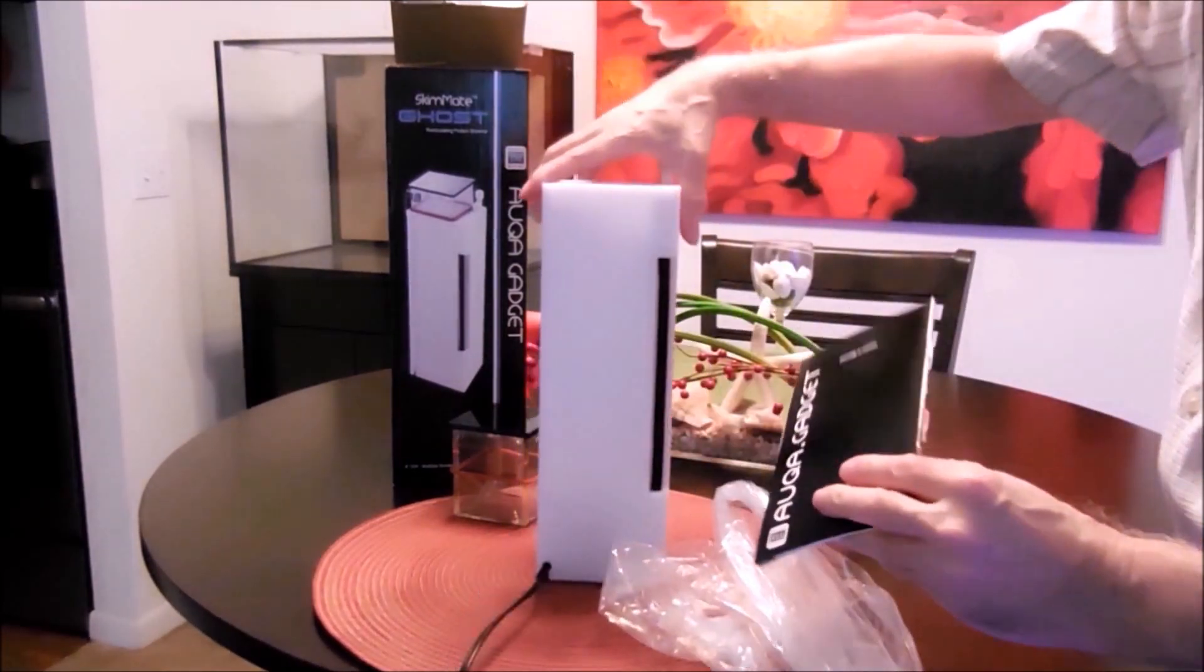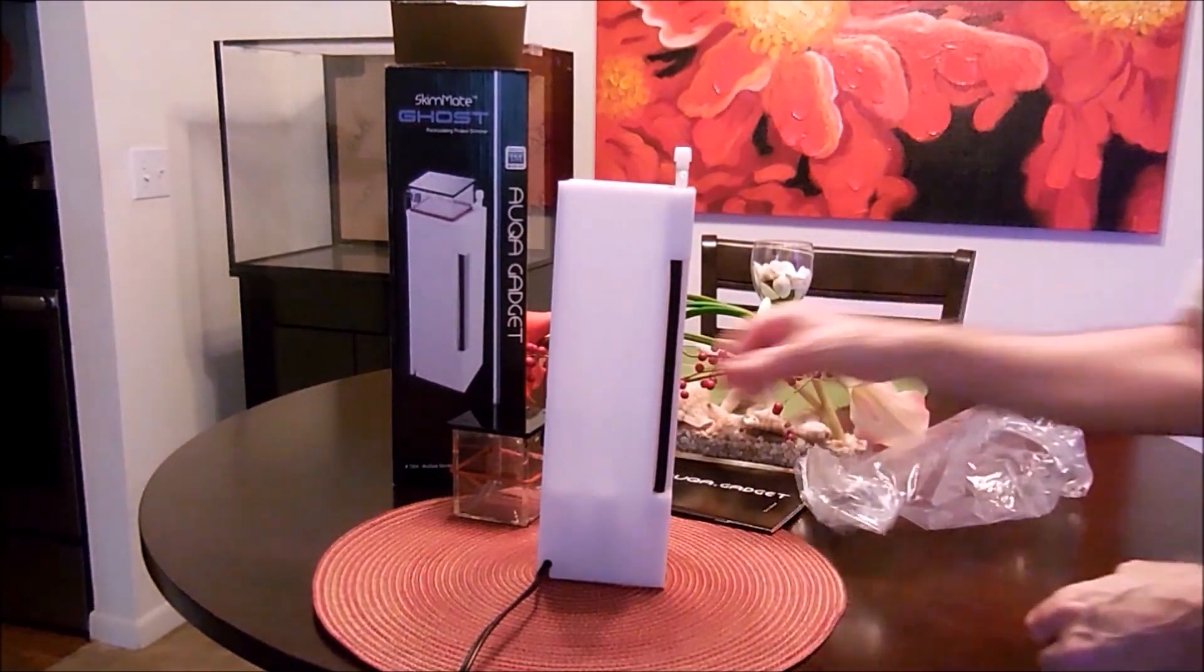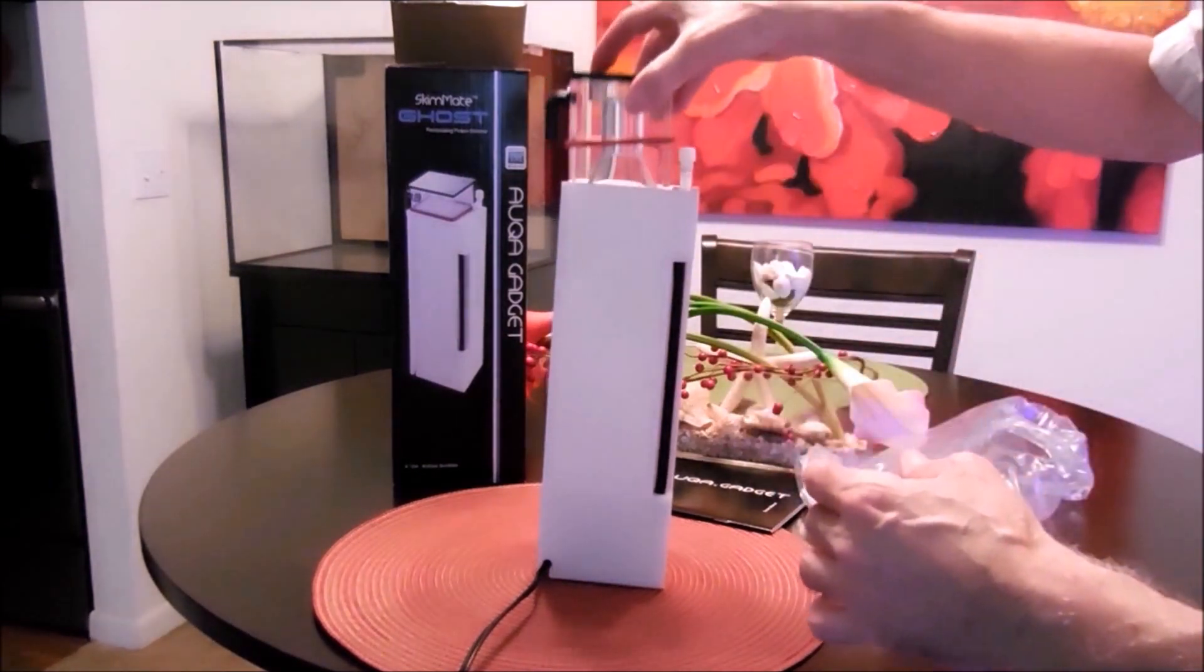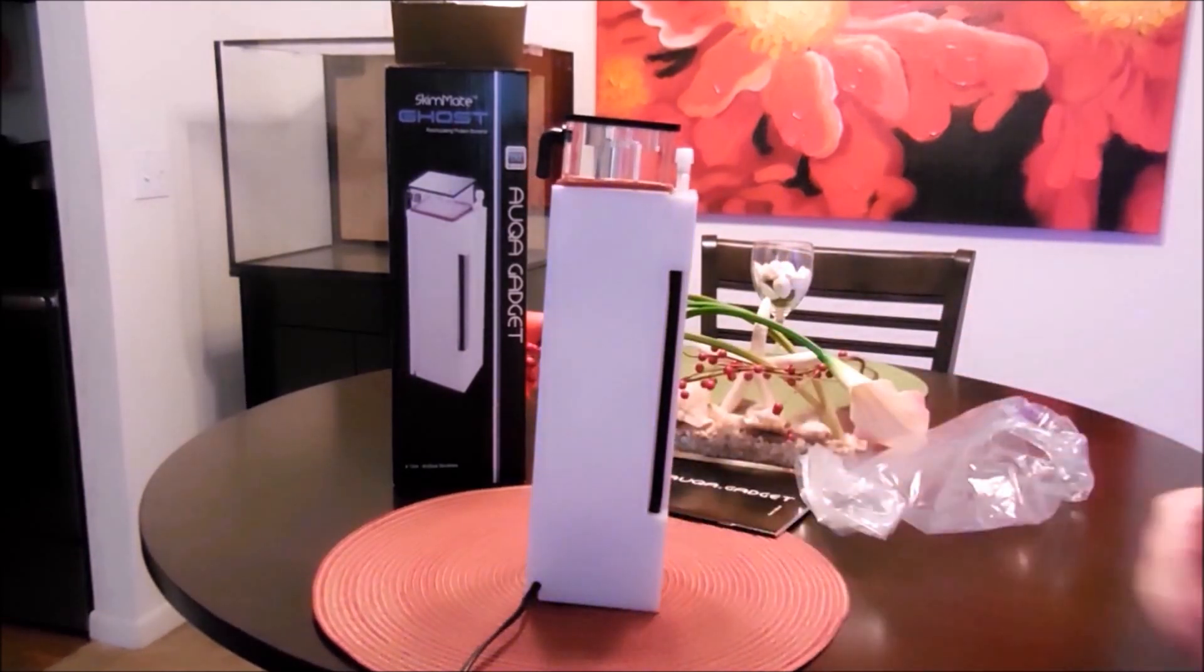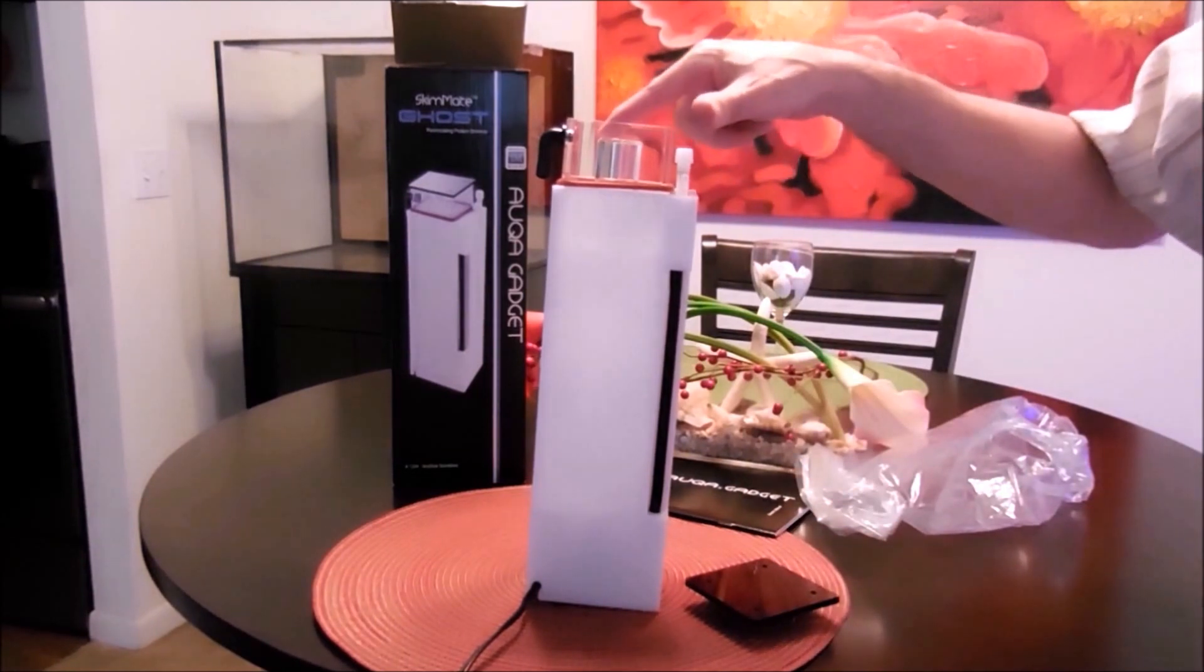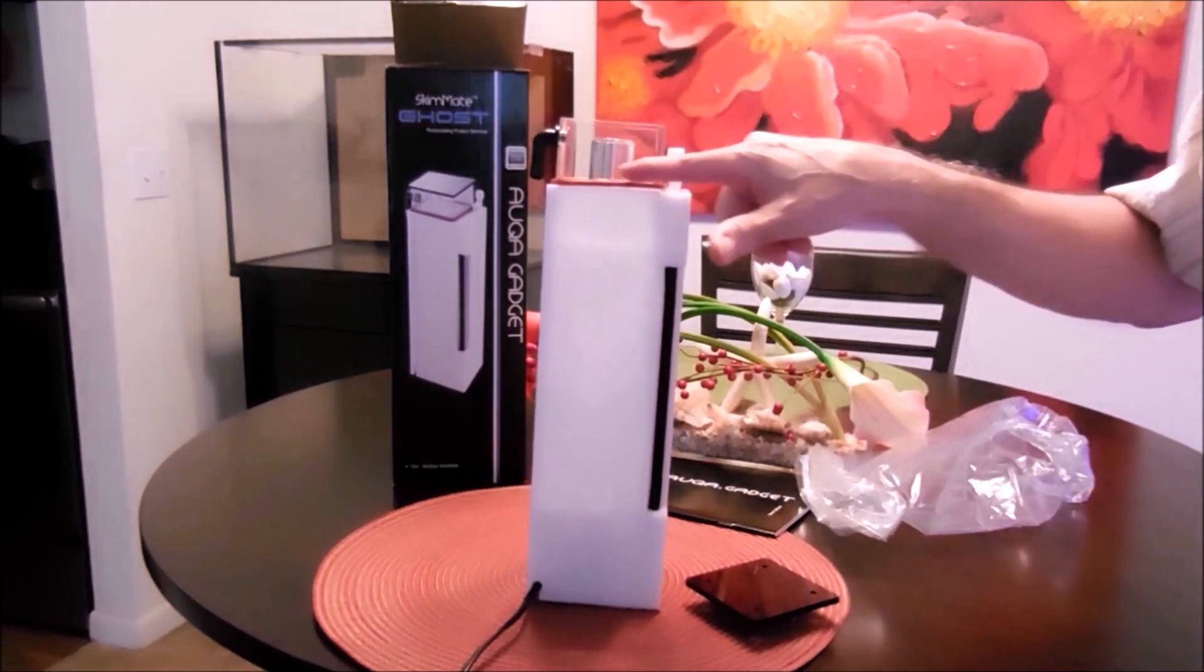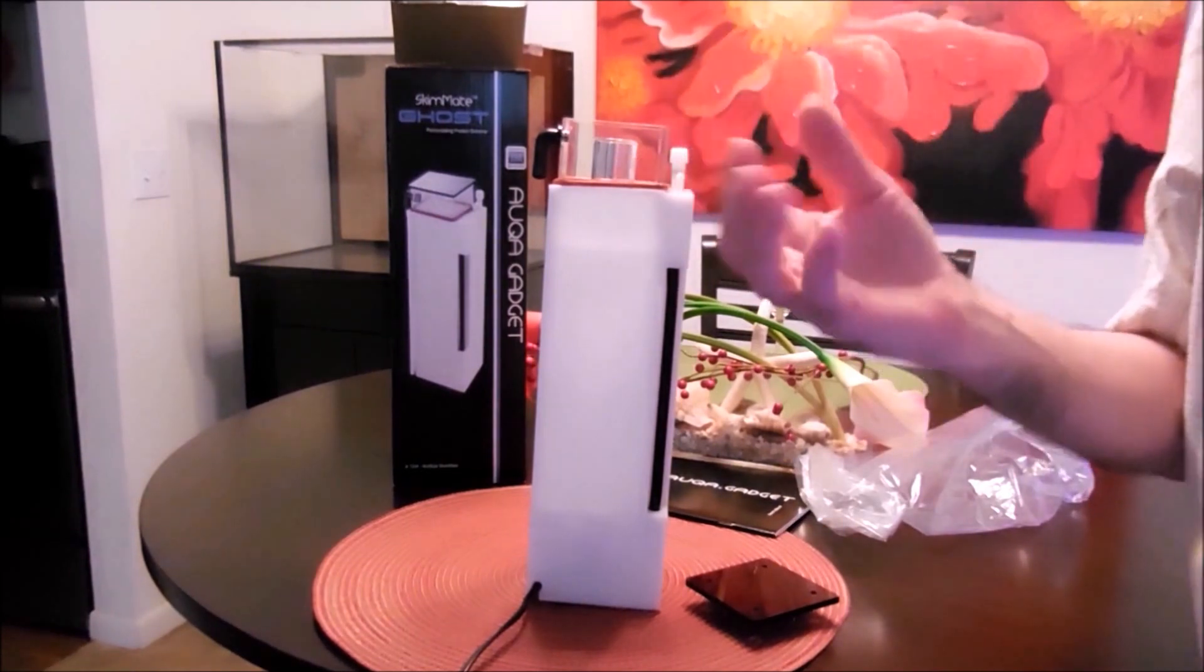Of course, we have the instructions. Let's put them back here. And then let's put back the collection cup. This is basically how it looks. There are different ways of adjusting the height of the water when it goes into the inner tube. The bubbles will stay there, will cascade to the cup, having that coffee-colored skim material, the protein that's coming out of the tank.